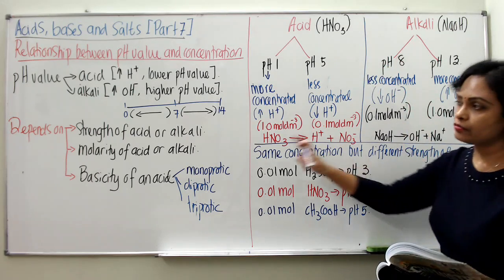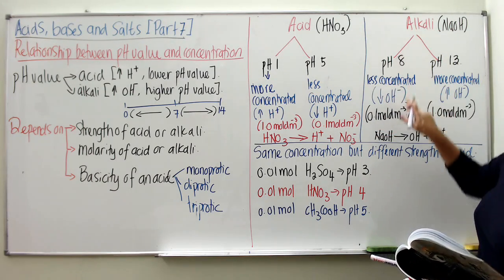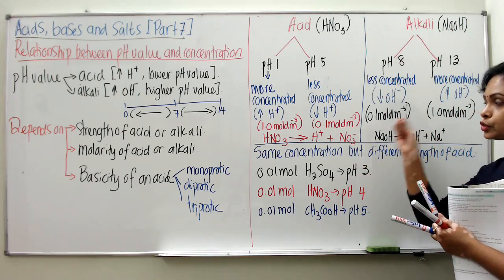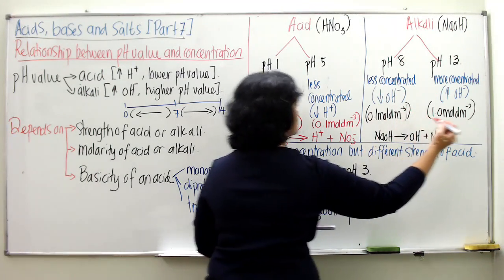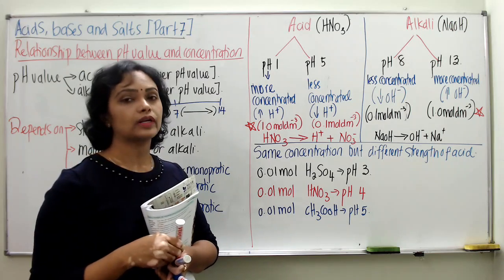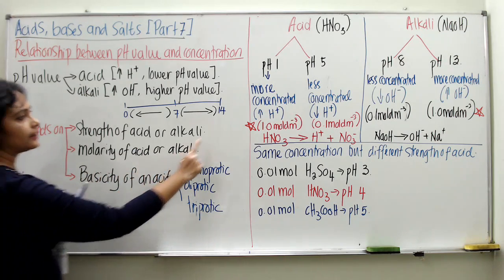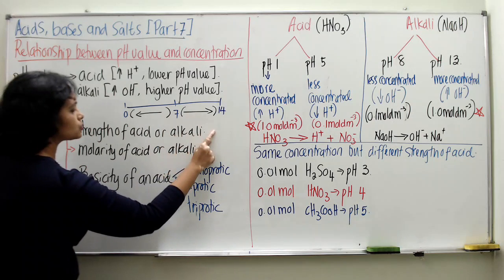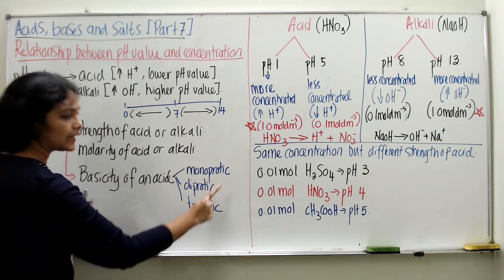We are not comparing the strength of acid and alkali here because we are discussing the same type of acid and the same type of alkali — we can't argue on the strength. I am trying to show you how does the molarity affect pH value. This is where the game starts — how does the molarity or concentration affect the pH value?